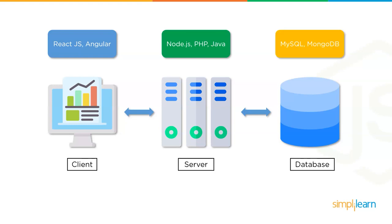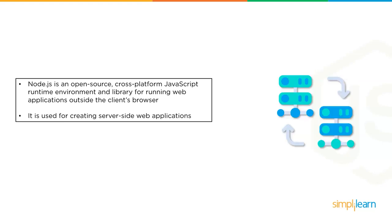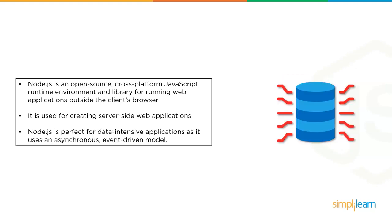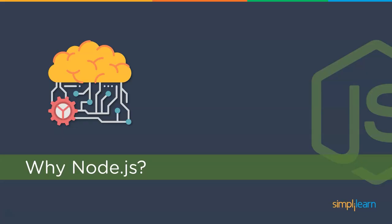The back-end database usually consists of MySQL or MongoDB. Node.js is an open source, cross-platform JavaScript runtime environment for running server-side applications. It is used to develop I/O intensive web applications like video streaming sites, single page applications, and online chatting applications. It is used by large established companies and newly minted startups. Node.js was developed by Ryan Dahl in 2009, and its latest version is v13.3.0.